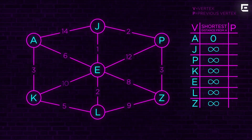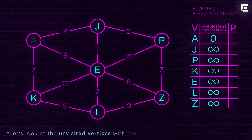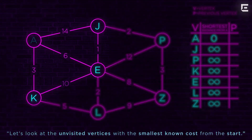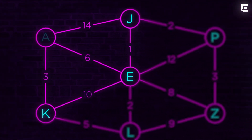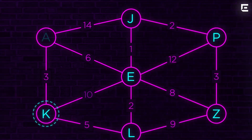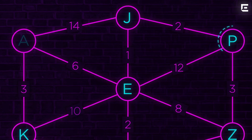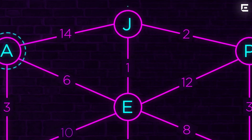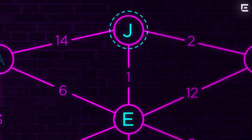There are no costs on all the other vertices yet, but mathematically we should put infinity symbols there, because we don't know the costs. We've been to A, so let's cross it out — we can't use it again in a calculation. Looking at unvisited vertices with the smallest known cost from the start, the vertices connected to A are J, E, and K. P has no direct connection to A — it goes through another vertex, J. So only J, E, and K.